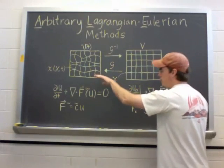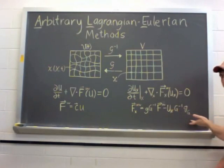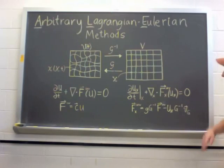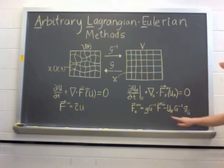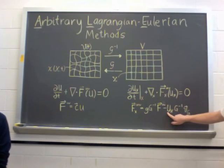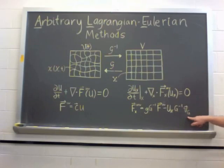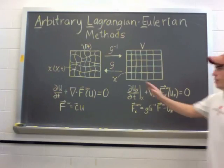But to include the moving geometry, we also have to include this term, which corresponds to fluxes from the moving mesh. So again, we have the inverse Jacobian. This is the mesh velocity. And this is again our conserved variable. So this is kind of like a convective flux coming from the moving mesh.